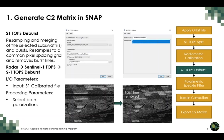The Sentinel-1 TOPS Deburst tool is used to reduce image distortion between burst lines. The deburst tool resamples and merges bursts into a common pixel spacing grid and removes the burst lines. To open the tool, under the Radar Processing tab select Sentinel-1 TOPS → Sentinel-1 TOPS Deburst. Select the calibrated output file as input, define an output target file, select both polarizations, run the tool, and inspect the results to confirm that the burst lines have been removed.